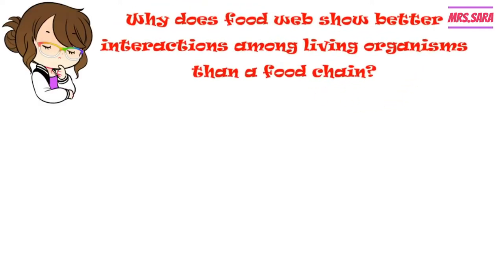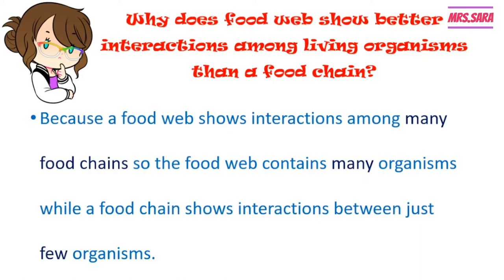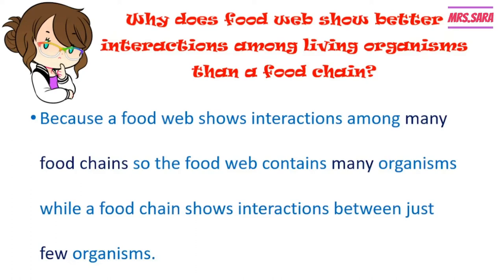Why does a food web show better interactions among living organisms than a food chain? That's because a food web shows interactions among many food chains and contains many organisms, while a food chain shows interactions between just a few organisms. So a food web is better than a food chain because the food web contains many organisms while food chains contain just a few.